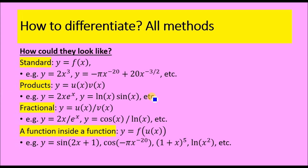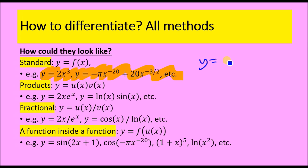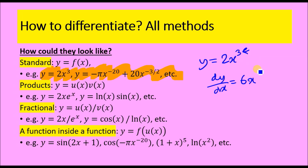Differentiation comes in many forms. Functions come in either a standard power form, typically y equals f(x). For example, if we had y equals 2x to the power 3, then to differentiate, you just drop the power: dy/dx would be 3 times 2, which is 6, and then you subtract 1 from the power so it becomes x squared.